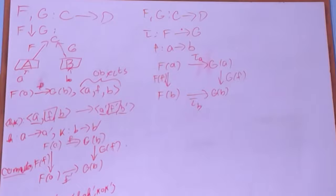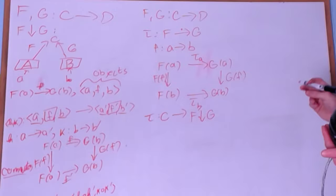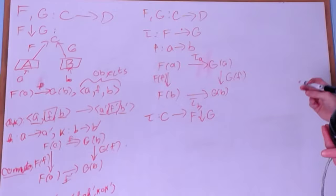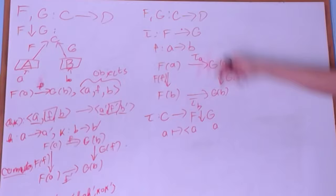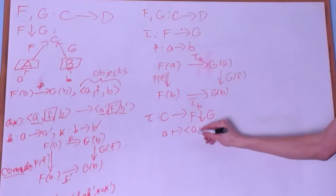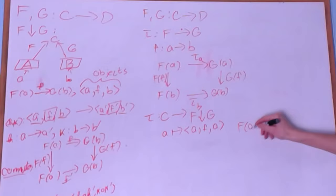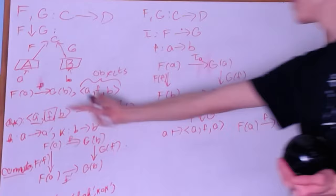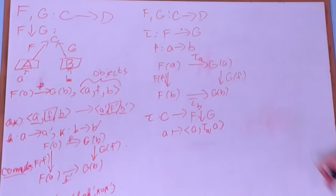So a way of describing natural transformations is: take in an element from the domain category and output an element of the comma category. We send an object A to a triple. The only object we have is A, and since both functors share the same domain, both object slots should be A. So the triple is F of A via tau_A to G of A. That's the output of this functor applied to an object.